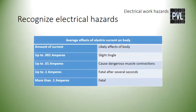On the screen now, you can see the average effects of electric current on the body. On the left column we see the amount of current; on the right column we see the likely effects. Up to 0.001 amperes you can feel a slight tingle. Up to 0.01 amperes could cause dangerous muscle contractions. Up to 0.1 amperes could be fatal after several seconds. And more than 0.1 amperes is usually fatal.